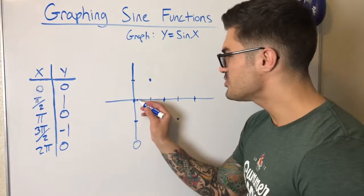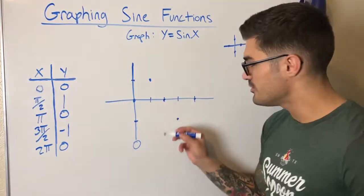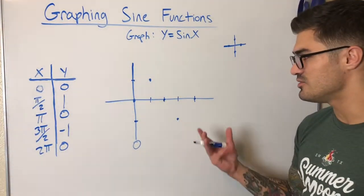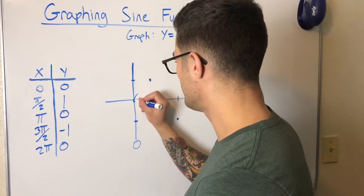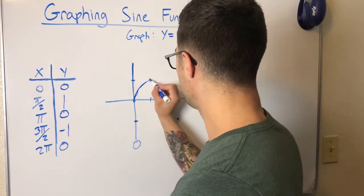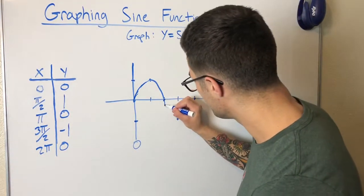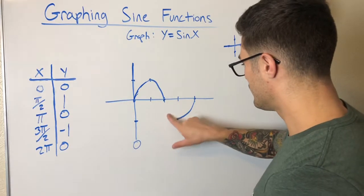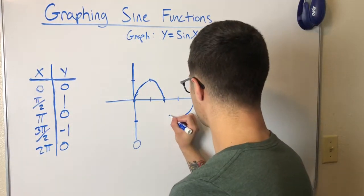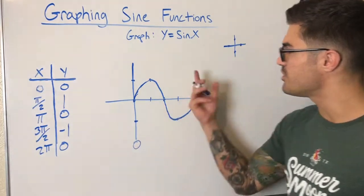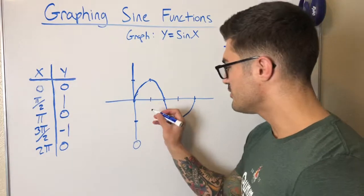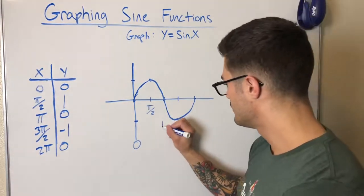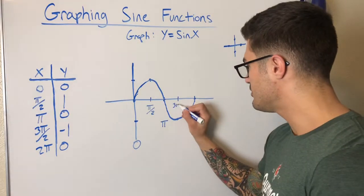You might be tempted to draw straight lines through these points, but these are actually curves. If you've heard the term 'sine wave,' that's exactly what to expect — a wavy curve. So it does look something like this. My graphs aren't perfect, but it curves through those points. This is the parent function for sine, and I label pi, three pi over two, and two pi on the axis.